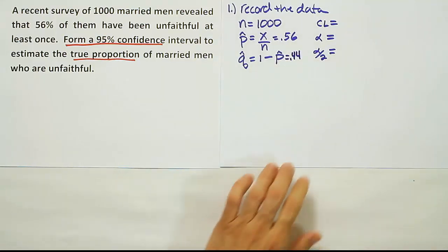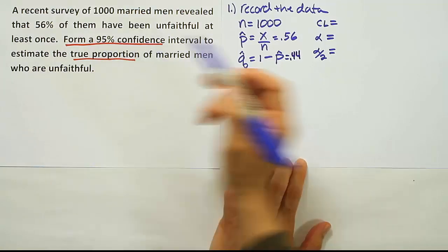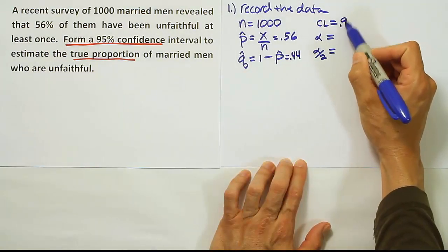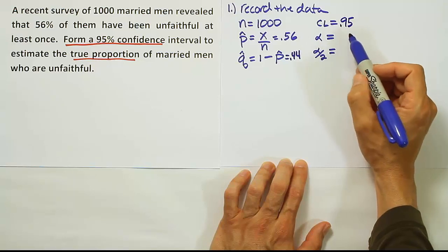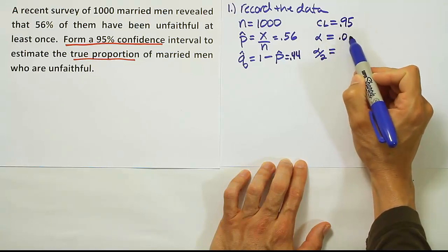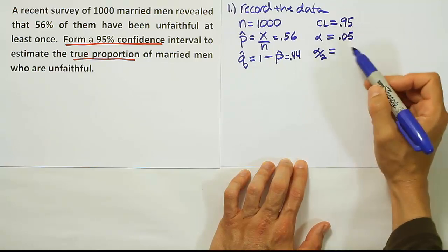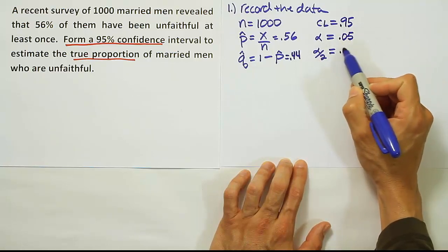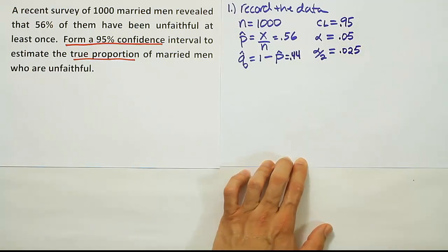The last thing we want to fill in is 95% confidence level. If we have 95% confidence, we have 5% alpha—they must add up to 100. And then half of that is 0.025.